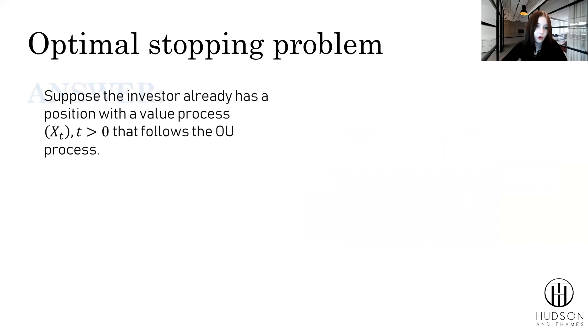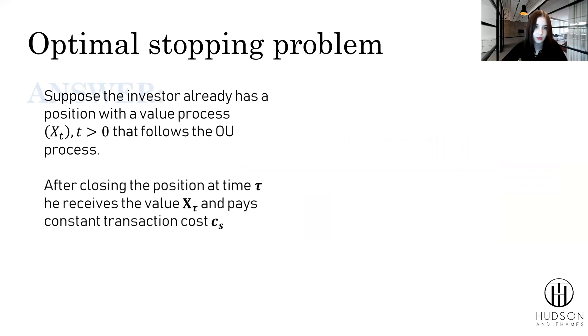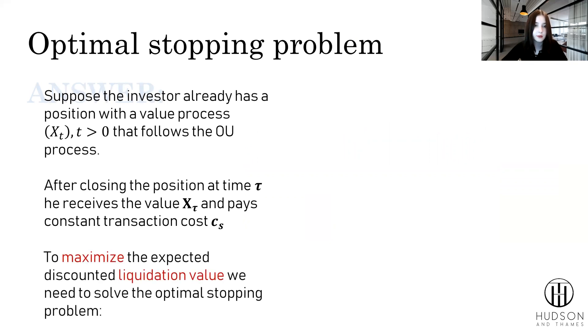Here comes the optimal stopping problem with the answer. Suppose the investor already has a position with a value process X that follows the OU process. After closing the position at time tau, he receives the value x_tau and pays constant transaction cost c. To maximize the expected discounted liquidation value, we need to solve the optimal stopping problem.